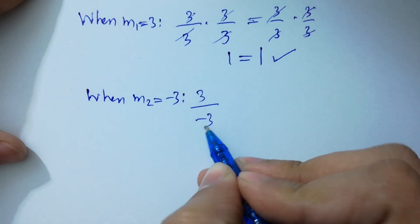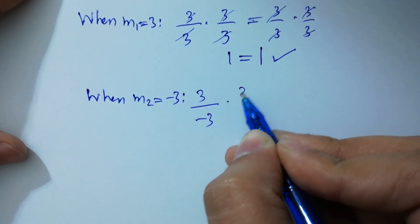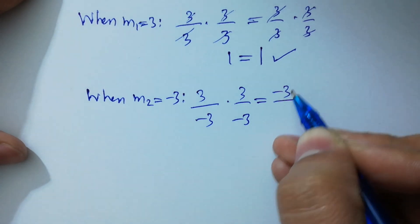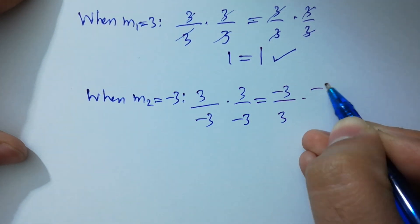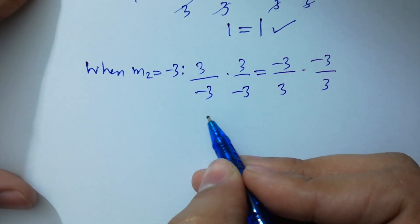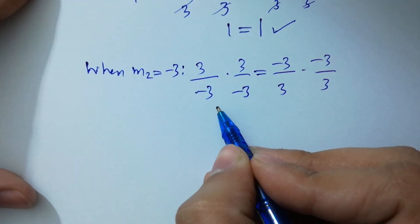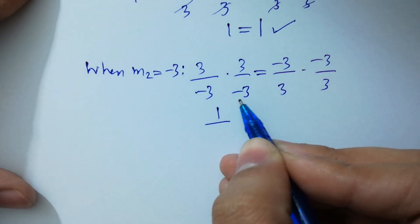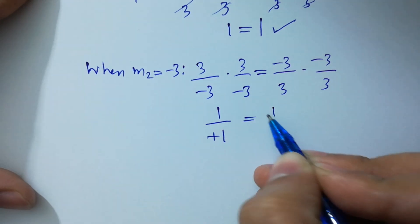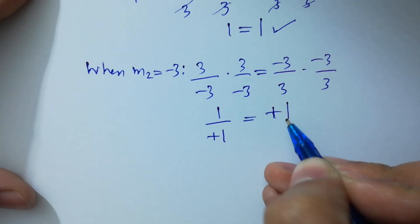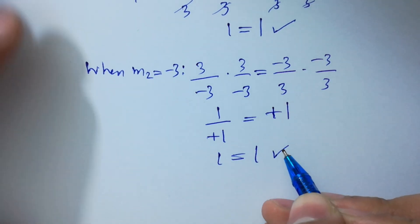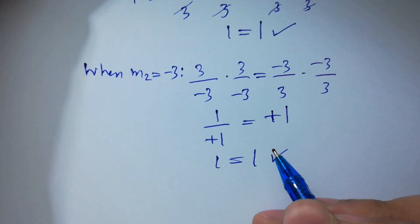When m2 equals minus 3: (3/minus 3) times (3/minus 3) equals (minus 3/3) times (minus 3/3). The 3s cancel and we get (minus 1) times (minus 1) equals (minus 1) times (minus 1), so 1 equals 1, which satisfies the equation.